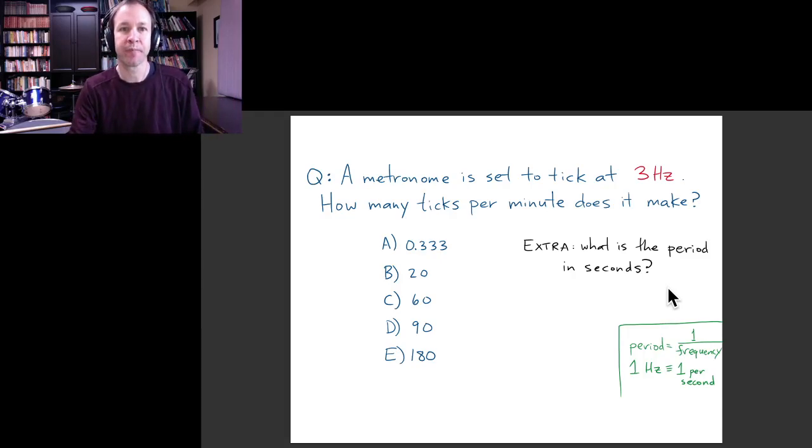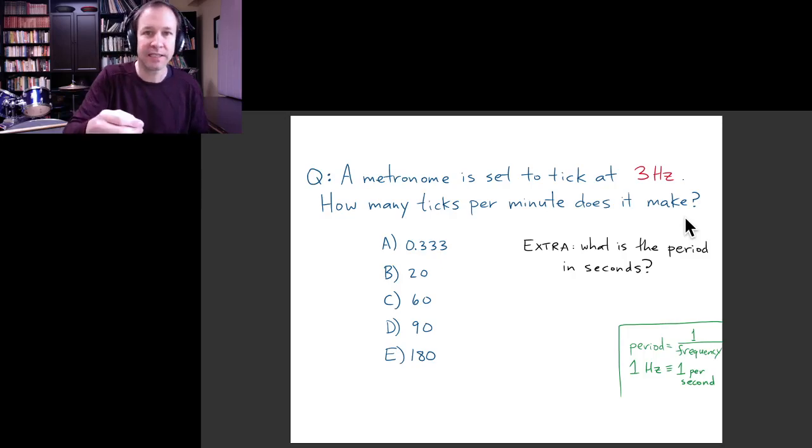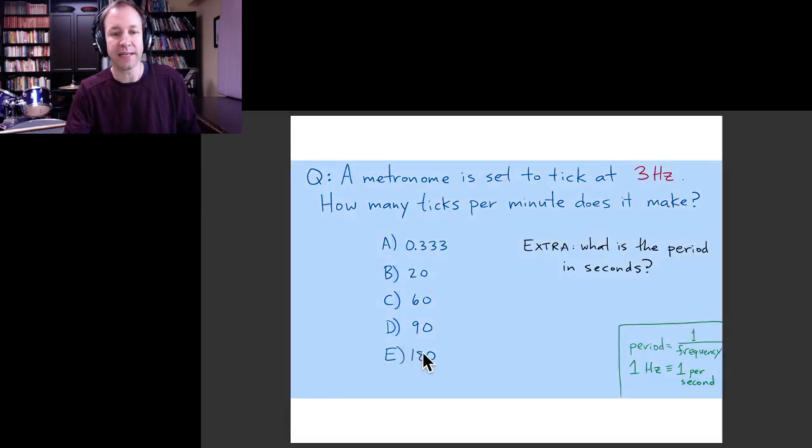The first thing to remember is that hertz is a unit that just means inverse seconds. The metronome ticking at 3 hertz means that the frequency is 3 inverse seconds or 3 ticks per second. The question asks how many ticks per minute does it make, so we just have to convert between seconds and minutes. We remember that there are 60 seconds in a minute, and since the metronome ticks 3 times per second, then the number of ticks per minute is going to be 3 times 60 or 180 ticks per minute.